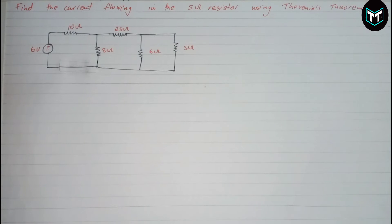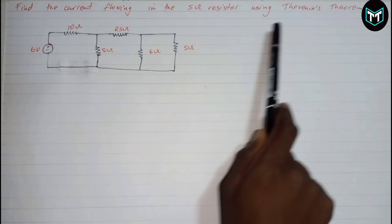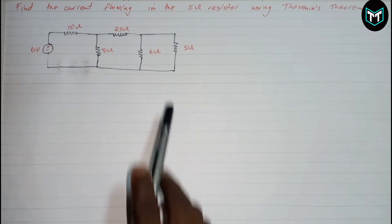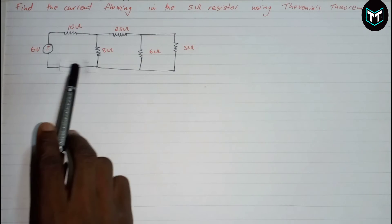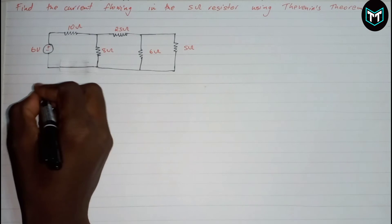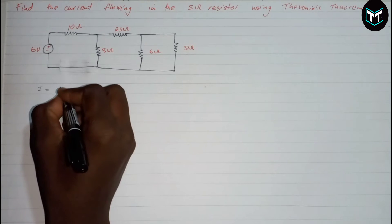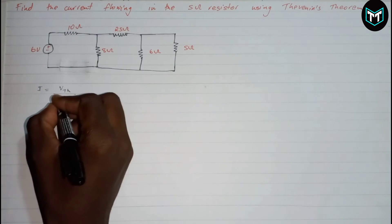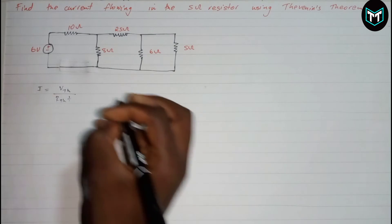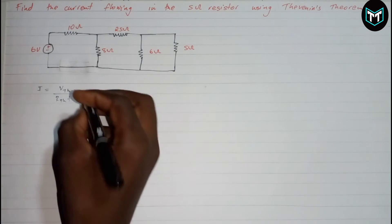Hi guys, welcome back to Thinking Online Learning. In this video I want to find the current flowing in the 5 ohm resistor using Thevenin's theorem. What we're going to do is find the Thevenin resistance and the Thevenin voltage, and after that we're going to use the formula: current equals Thevenin voltage over Thevenin resistance plus the load resistor.